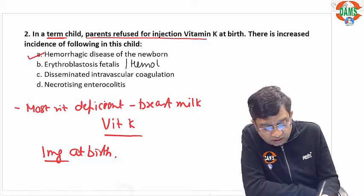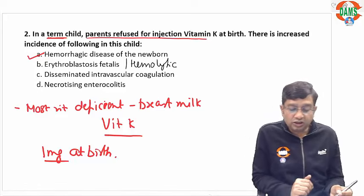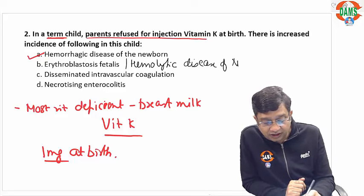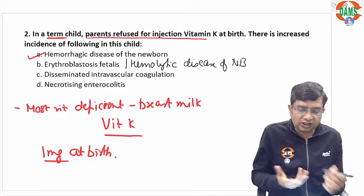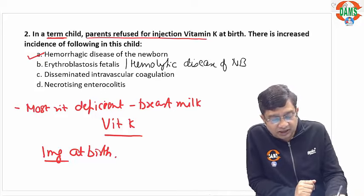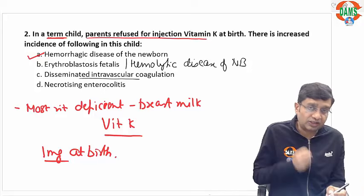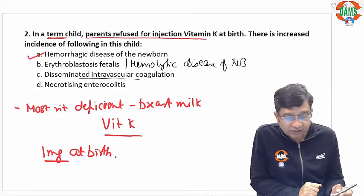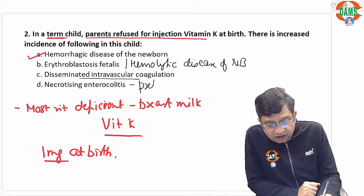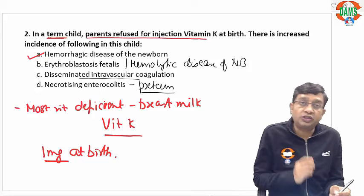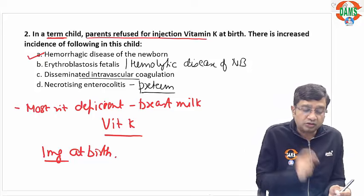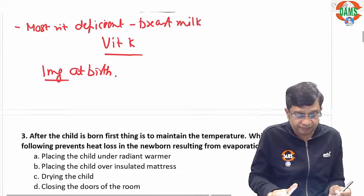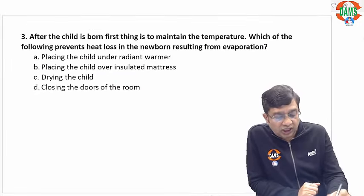Erythroblastosis fetalis, or hemolytic disease of the newborn, is due to ABO or RH incompatibility and has nothing to do with vitamin K. DIC cannot be prevented by giving injection vitamin K at birth. NEC's most common risk factor is a preterm child and has nothing to do with clotting factor deficiency. So the simple answer is hemorrhagic disease of the newborn.